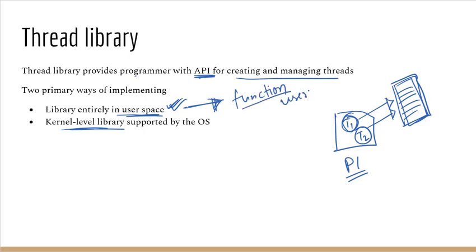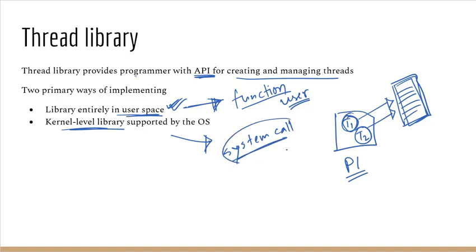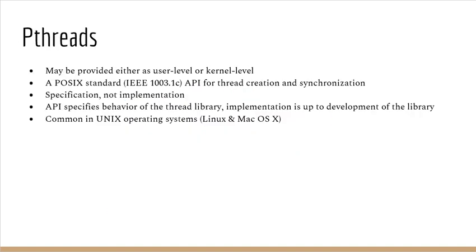For a user-level thread library, calling a function means executing that function locally in user space. On the other hand, for a kernel-level thread library, calling an API function will actually invoke a system call from the operating system, and through that system call a kernel-level thread is created.